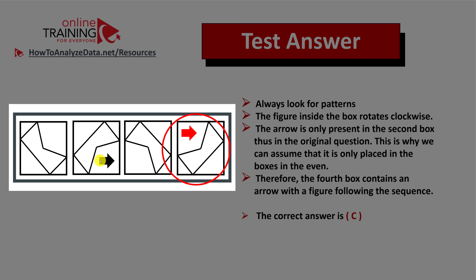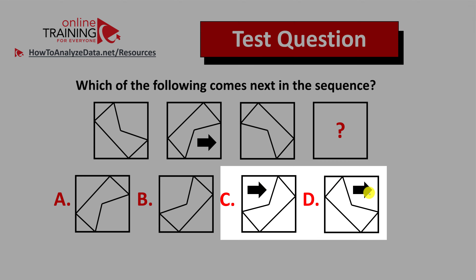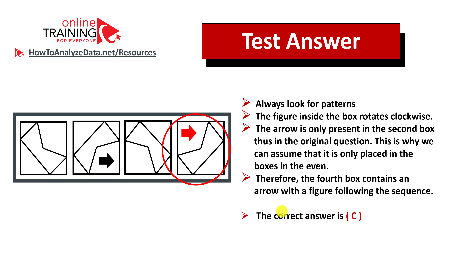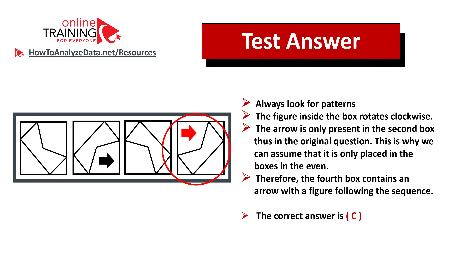There is also a pattern of arrows. Box number two has an arrow pointing to the right, while boxes one and three do not. So the arrow is only present in even-numbered boxes. Since box four is also even, you can logically assume the arrow should be present in box four. Among the choices, only C and D contain the arrow. You then determine the final box based on the position of the shape inside the square. The correct answer is choice C.